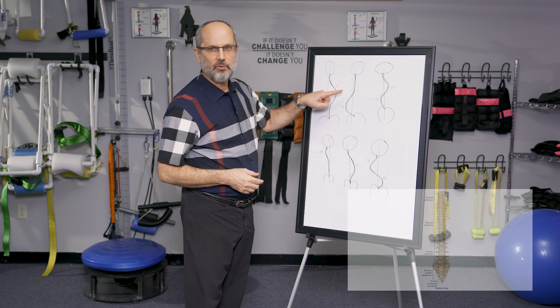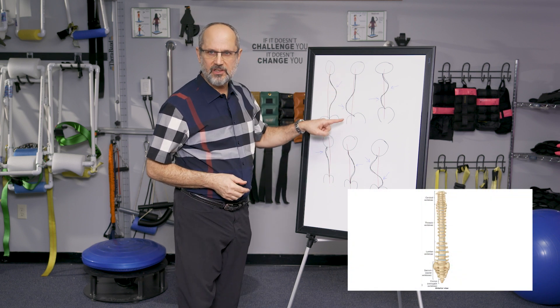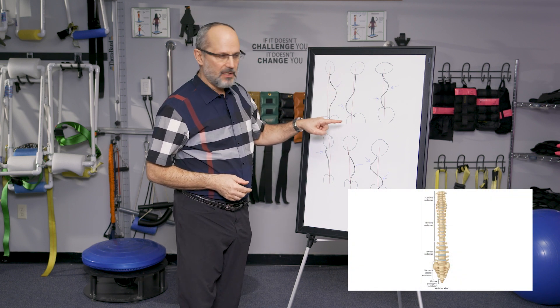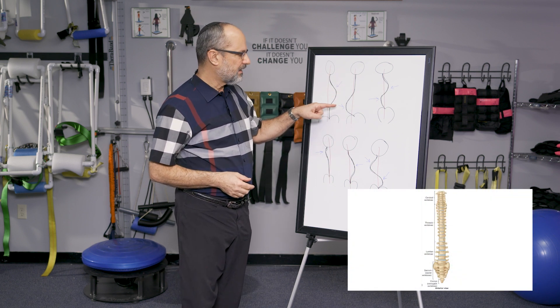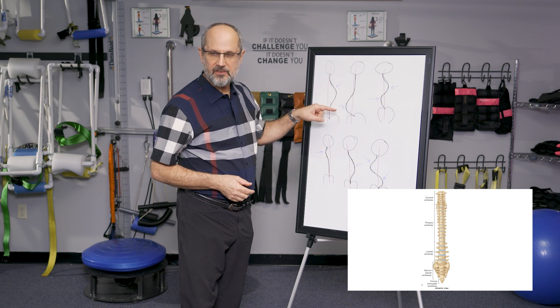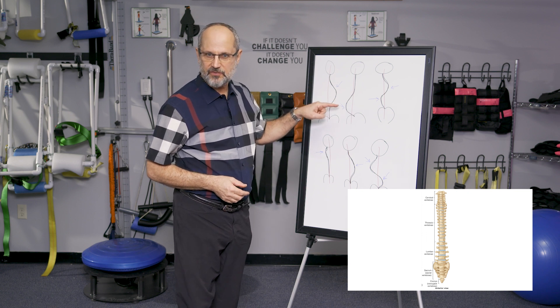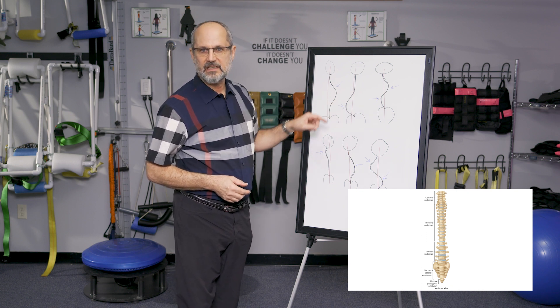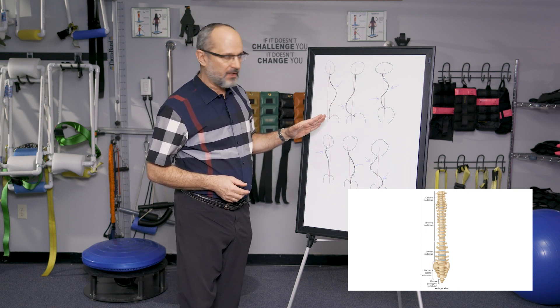In this one, we have a lumbar scoliosis. The apex — the part of the curve that's furthest from the red line — is in the lumbar spine.